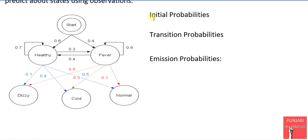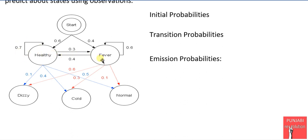Let's revise the initial concepts of initial probabilities and transition probabilities. In this diagram, the initial probabilities are the probabilities of the starting state. The probability of starting in the healthy state is 0.6 and the starting fever state is 0.4 — these are initial probabilities. The probability of moving from one state to the next state, or from one state to the same state, is called transition probability. These are 0.6 and 0.4, and 0.3 and 0.7.